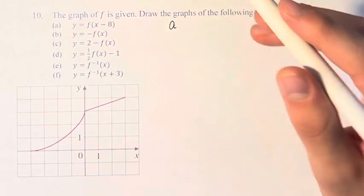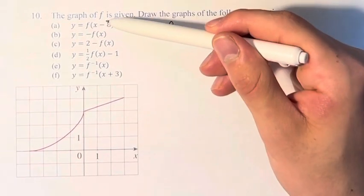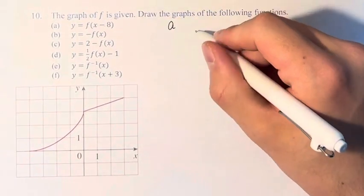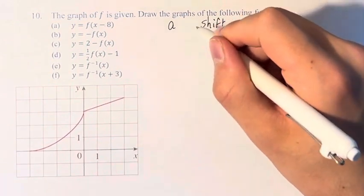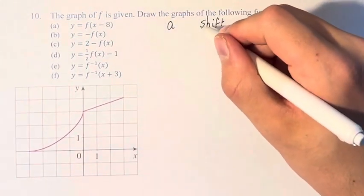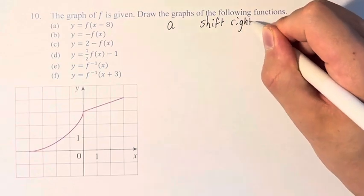First, we're going to write what these transformations actually are. For part a, we're subtracting 8, so that's a horizontal shift. It's subtraction, so it's to the right 8 units.